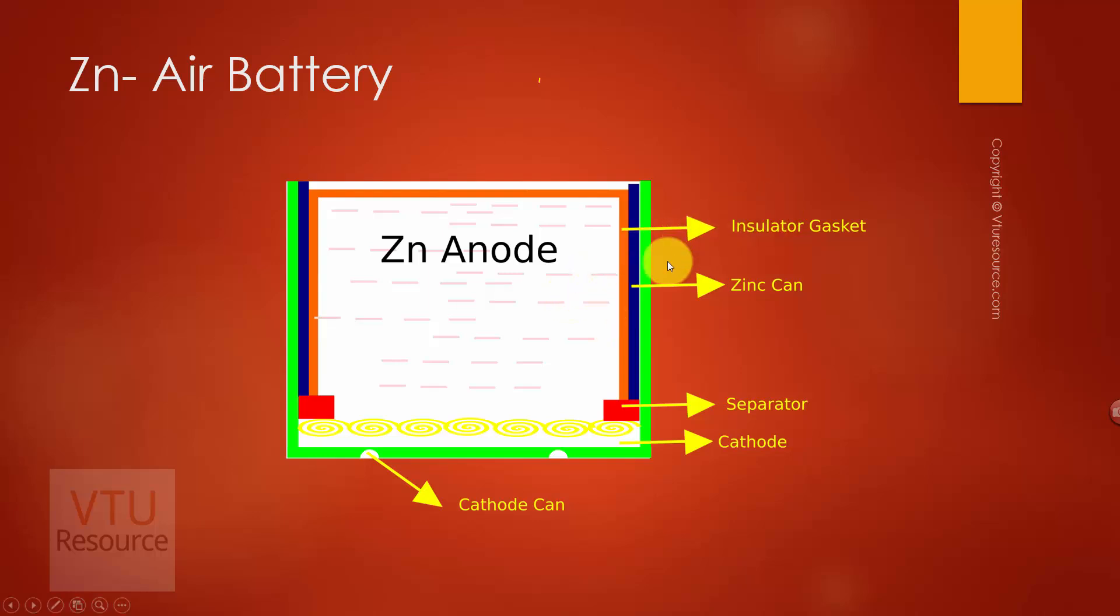That means it allows only oxygen to enter, not the moisture. Why only oxygen is required? Because as the name indicates, zinc air. So here the electroactive species at cathode is air, that is oxygen. So the Teflon allows only the air to pass into the battery and not the moisture.